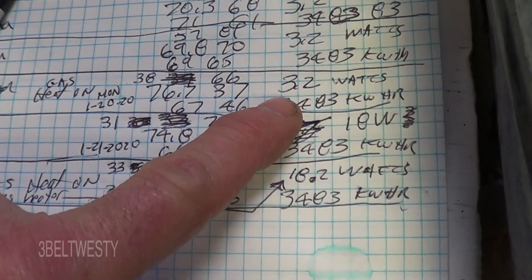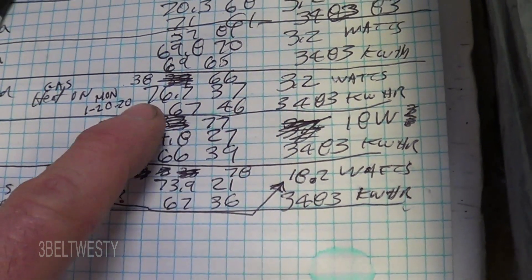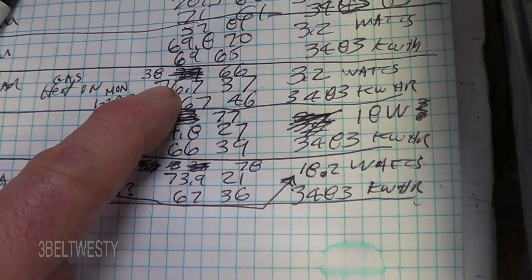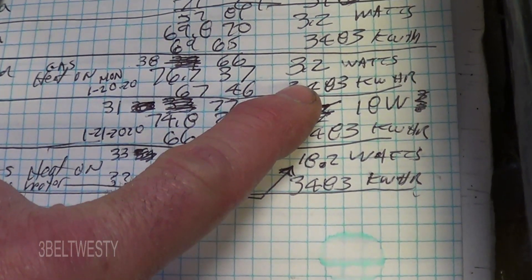Okay, this is the power draw of the climate unit outside and inside. And Monday it was 38 degrees, and it was 3.2 watts, which is just the residual circuits.